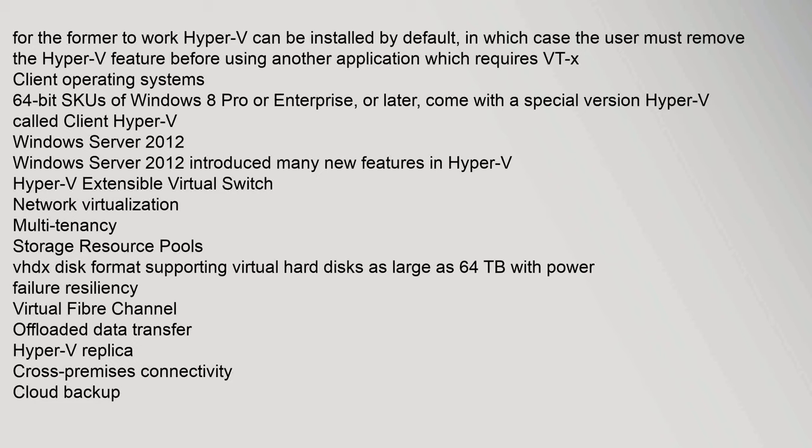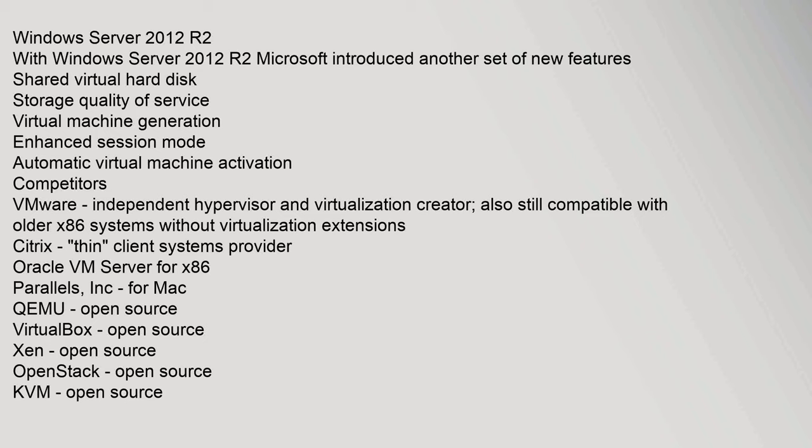64-bit SKUs of Windows 8 Pro or Enterprise or later come with a special version called Client Hyper-V. Windows Server 2012 introduced many new features including shared virtual hard disk storage, storage quality of service, virtual machine generation, extensible virtual switch, network virtualization, multi-tenancy, storage resource pools, and VHDX disk format supporting virtual hard disks as large as 64 TB. Windows Server 2012 R2 introduced additional features: shared virtual hard disk storage quality of service, virtual machine generation, enhanced session mode, and automatic virtual machine activation. Competitors include VMware, Citrix, Oracle VM Server for x86, Parallels, QEMU, VirtualBox, Xen, OpenStack, and KVM.